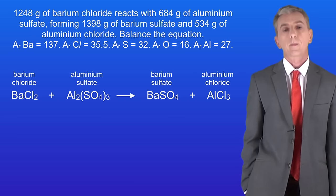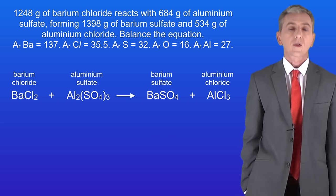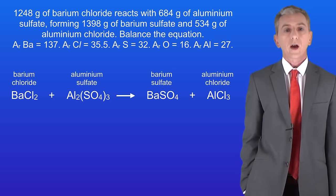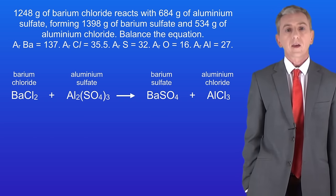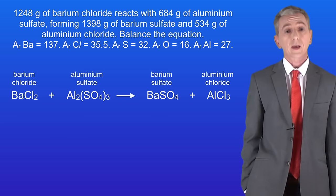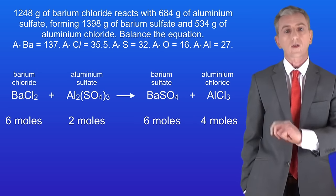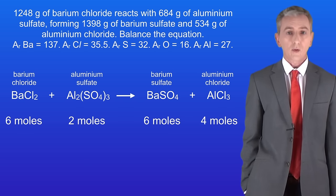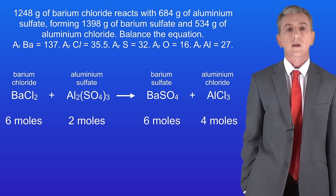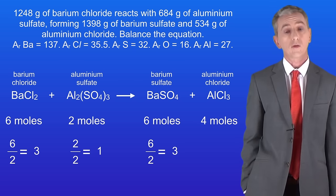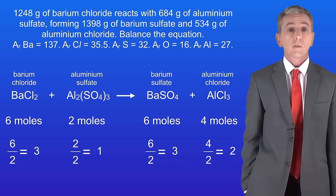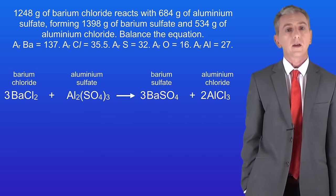Here's a final example for you to try. 1248 grams of barium chloride reacts with 684 grams of aluminium sulfate, forming 1398 grams of barium sulfate and 534 grams of aluminium chloride. Balance the equation. This looks tricky but it really isn't if you follow the method. Pause the video now and try this yourself. First we work out the number of moles: 6 moles of barium chloride, 2 moles of aluminium sulfate, 6 moles of barium sulfate, and 4 moles of aluminium chloride. Next we divide by the smallest number, which is 2: 6÷2=3, 2÷2=1, 6÷2=3, and 4÷2=2. These are the numbers we use to balance the equation, and don't forget we don't need to write the number 1.